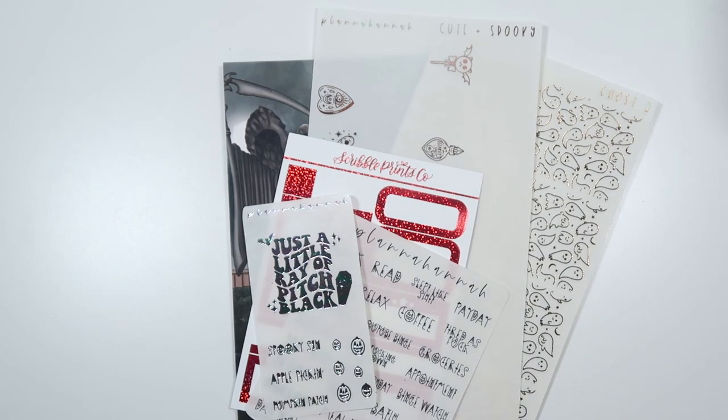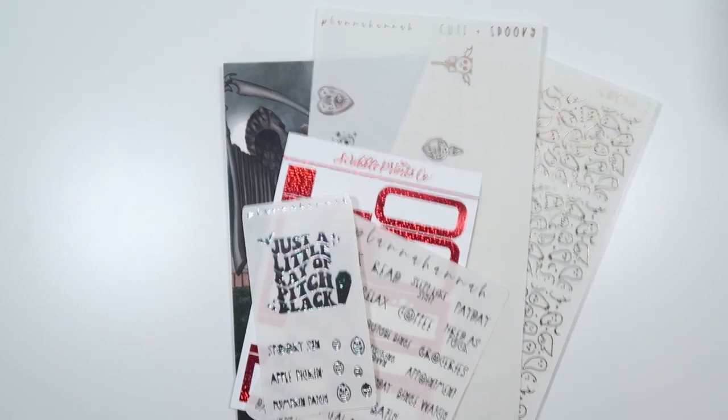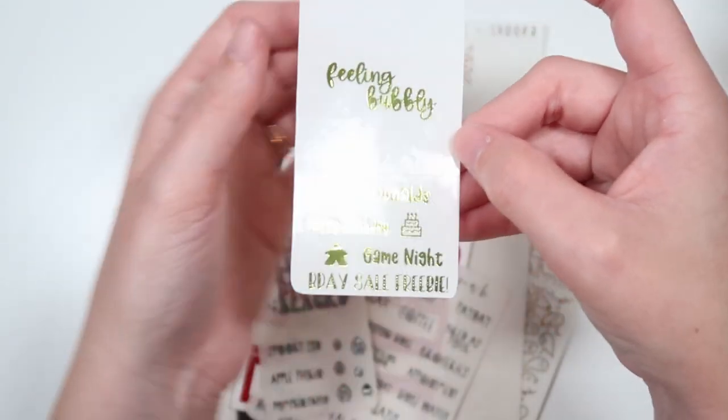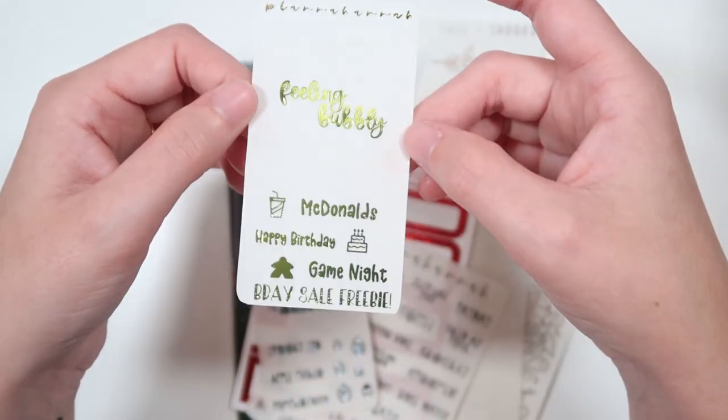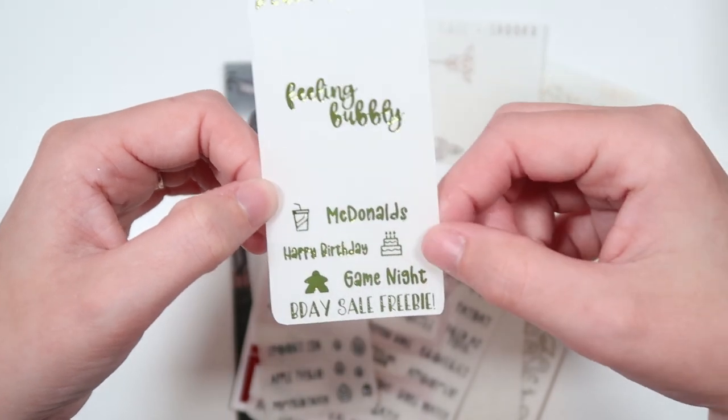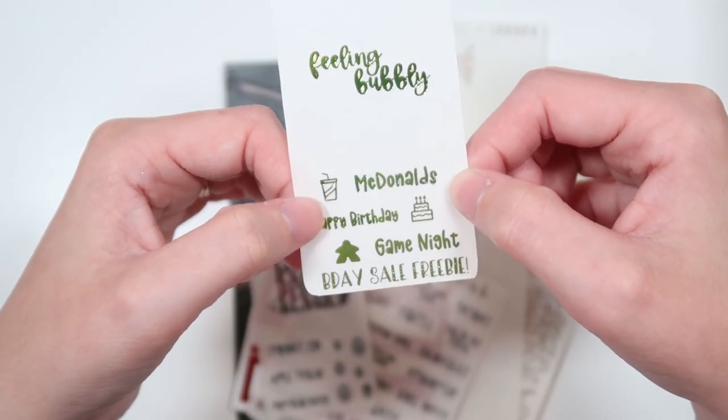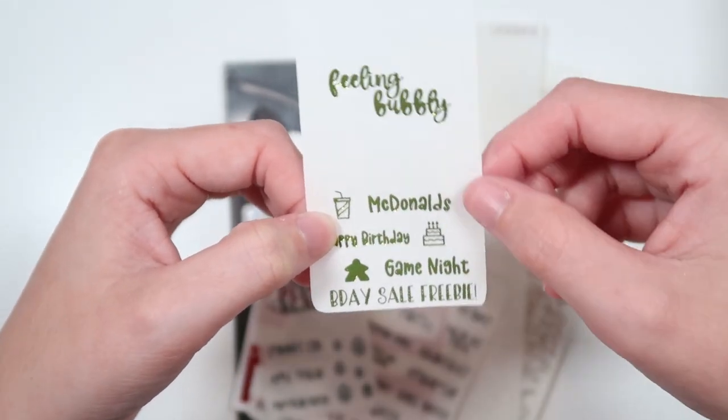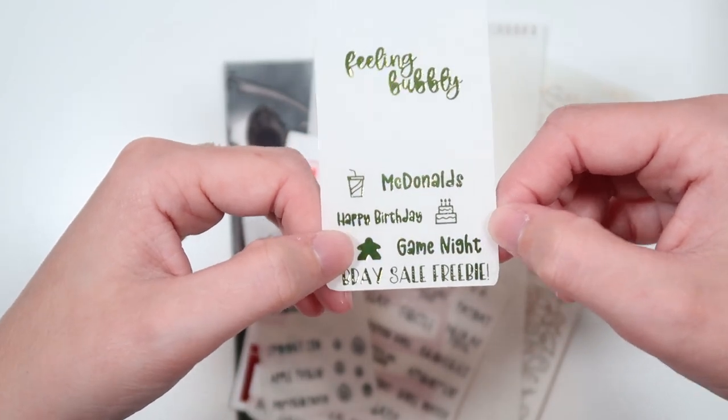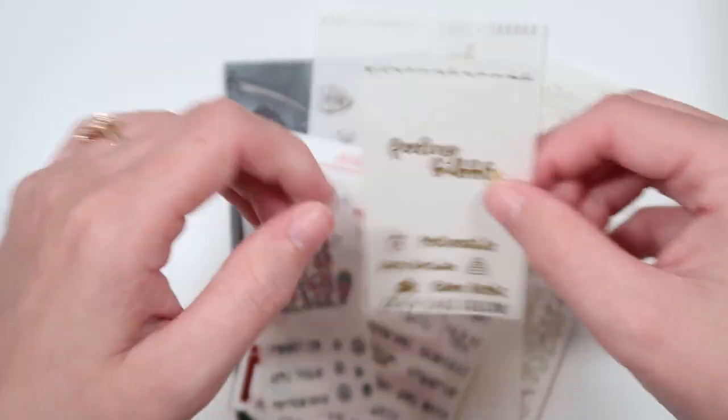And then we do have, like I said, an exclusive sale freebie which if you guys are vlog watchers you will love this. I'm going to show it to you in lemongrass but you don't need to put anything in the notes. Automatically it'll be going out with all sale orders. This is in lemongrass and it says feeling bubbly. It's so cute! And then we have like coordinating icons with scripts. We've got the soda because feeling bubbly, and McDonald's happy birthday, and a cake, and then a meatball and a game night script. So that will be the sale exclusive freebie.